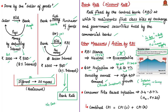RBI has also revised the consumer price index-based inflation downward to 3.4%–3.7% in the second half of the current fiscal year, i.e., financial year 2019–2020. CPI-based inflation is the inflation rate based on the final combined consumer price index, meaning both CPI urban and CPI rural data combined.